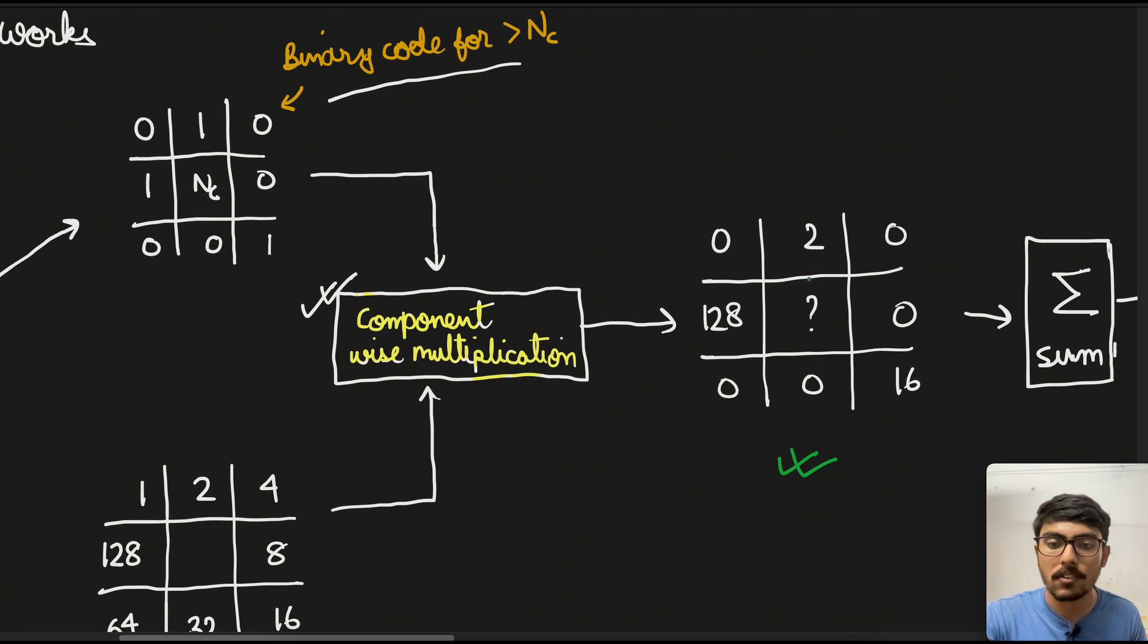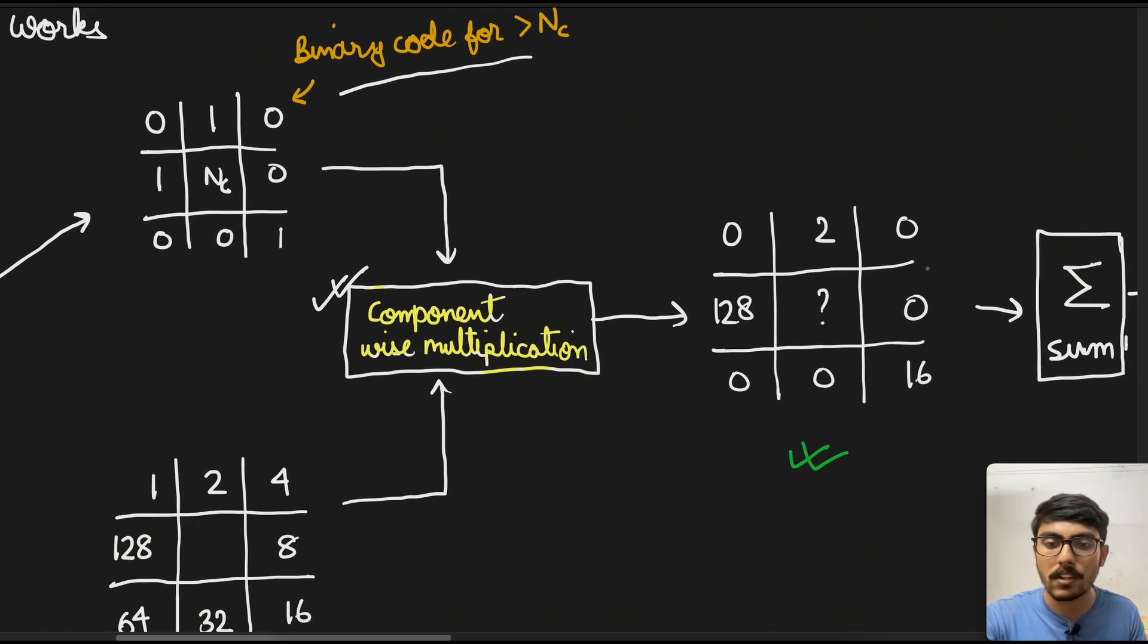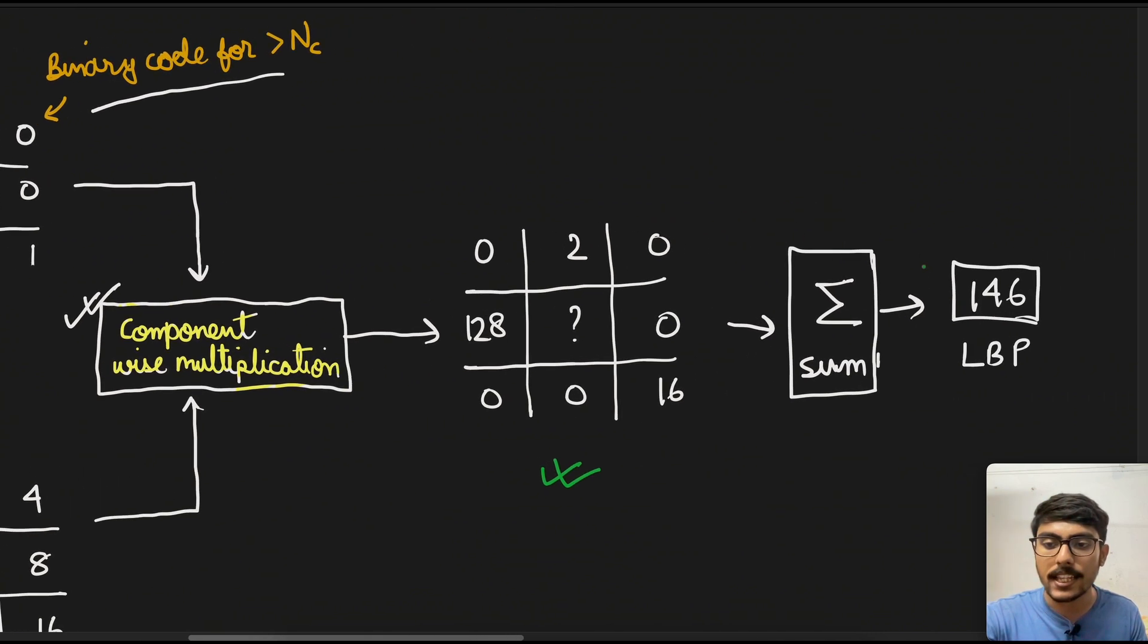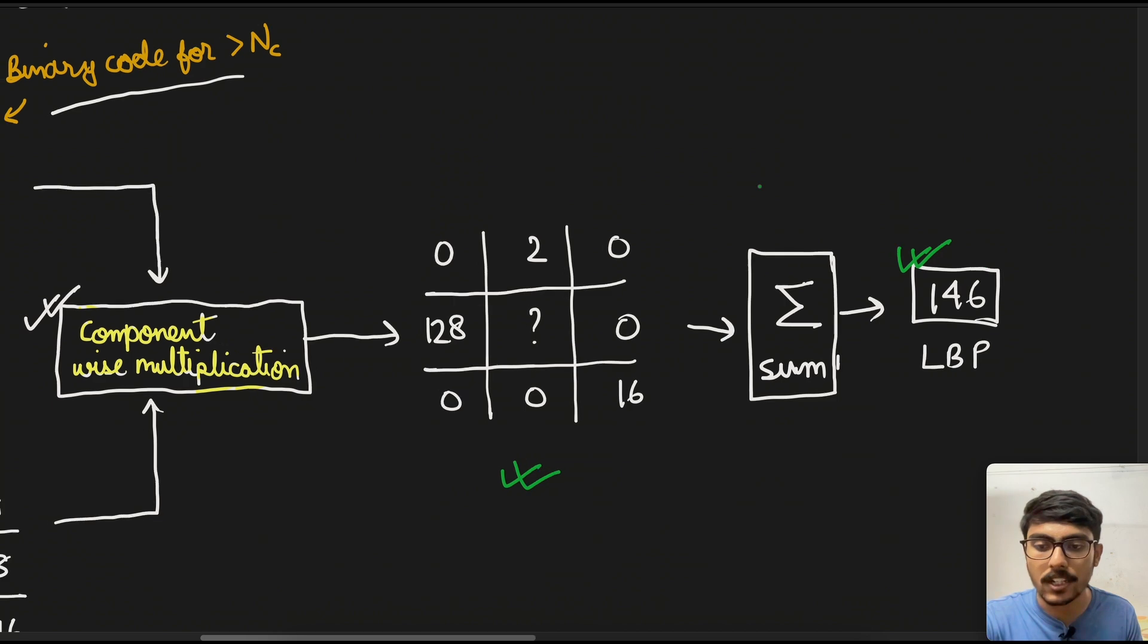Then we get this particular matrix. Once we get this, we can just sum all the values that are there. All others will be zero because if we multiply zero with eight, it becomes zero. We can simply add all the values that are present in this matrix, and that will be our LBP. So that's how LBP operator works.